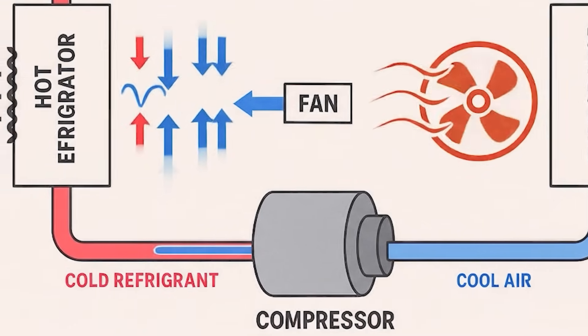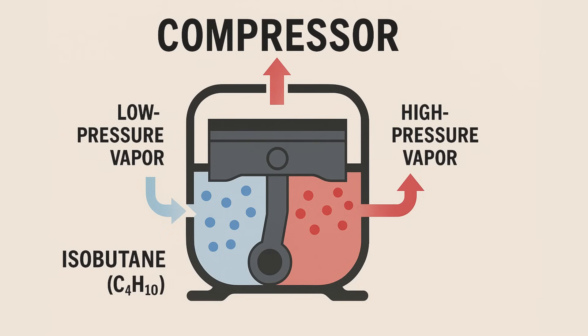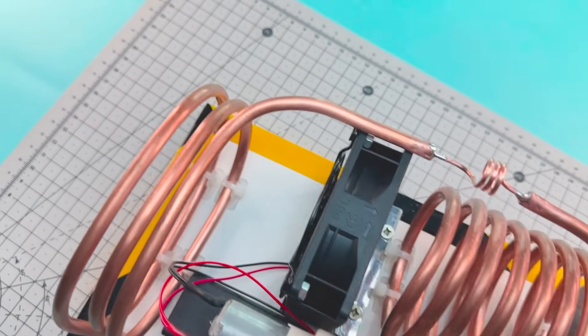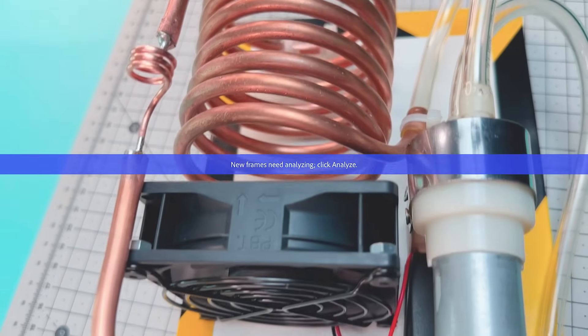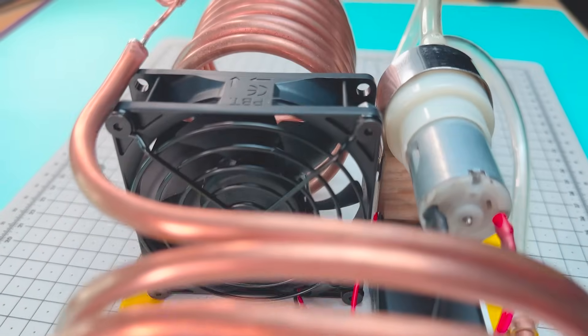That's where the pump comes in, simulating the role of a compressor. It collects the low pressure gas and compresses it, increasing its temperature. Then as it passes through another section of the circuit, the gas releases that heat into the environment and condenses. It becomes liquid again, and the circuit is complete.